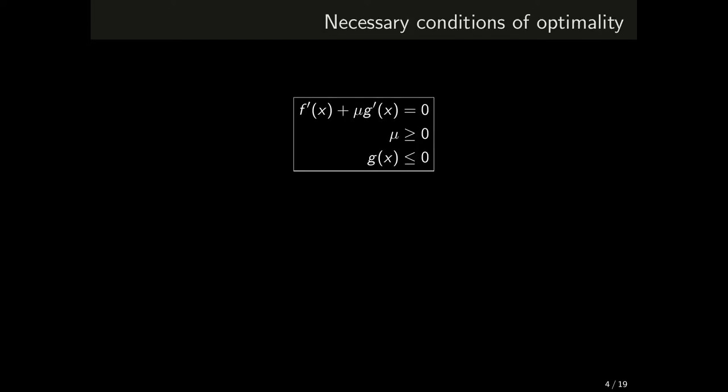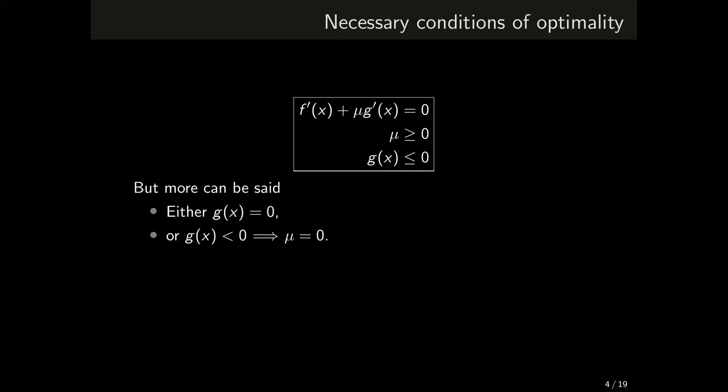Similarly, as in the Lagrange multiplier approach for the equality constraint case, here we also have to include the original constraint when assembling the set of necessary conditions of optimality. As a matter of fact, something more can be said. Either g vanishes at the given x or the inequality is strictly satisfied. But in that case, do we need to consider the derivative of g? Actually no, and this is reflected in the condition that mu must be zero if g is strictly satisfied. As a result, we have the complementary slackness condition. The product of mu and g of x must be zero.